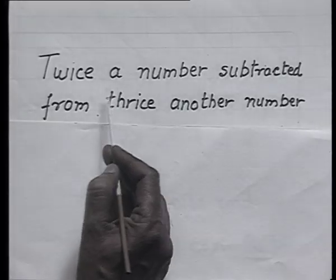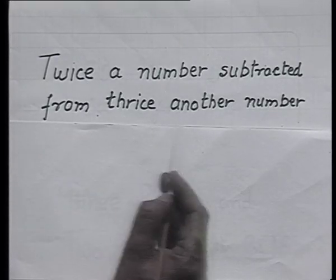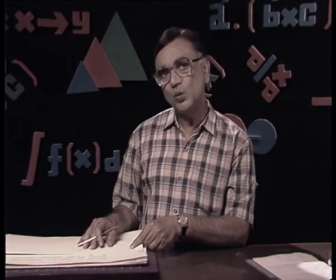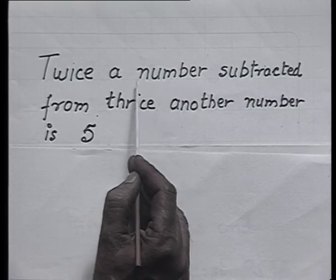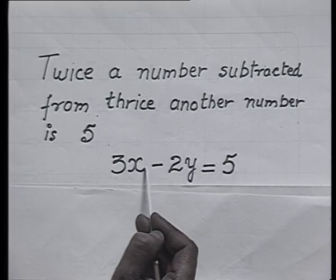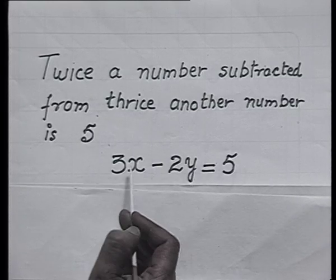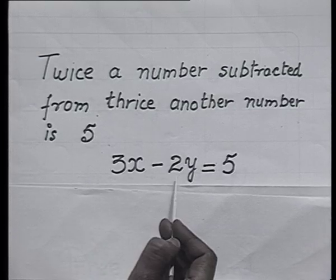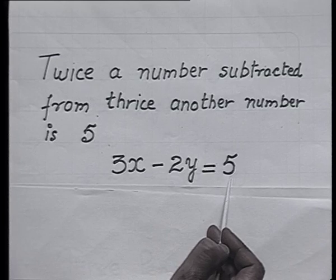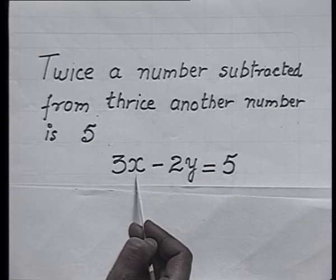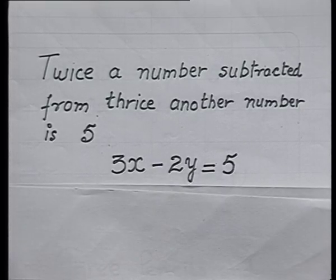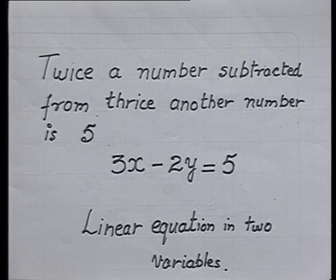I take a question: twice a number subtracted from thrice another number is 5. Can you frame the equation? We are talking of two numbers. If we take the first number as x and another number as y, then 3x minus 2y — because twice a number is subtracted from thrice another number — makes it equal to 5. The equation is 3x minus 2y equals 5, and this is also a linear equation in two variables.